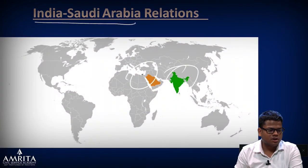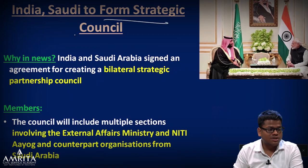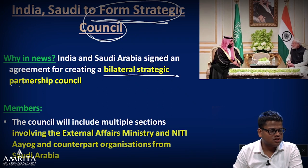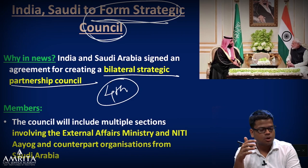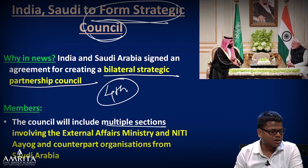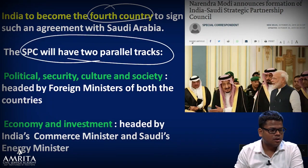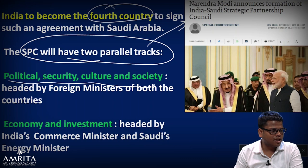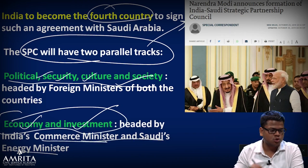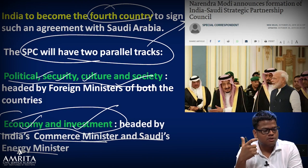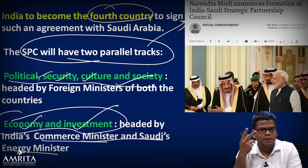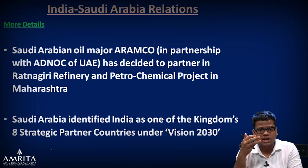India-Saudi Arabia relations: India and Saudi Arabia agreed to form a Strategic Partnership Council. India is the fourth country with which Saudi Arabia has such a council. The council will include multiple sections involving external affairs and the Niti Aayog counterpart in Saudi Arabia. It will have two parallel tracks: first, political-security-culture-and-society; second, commerce and investment — handled by commerce ministers — while the political track will be handled by foreign ministers.